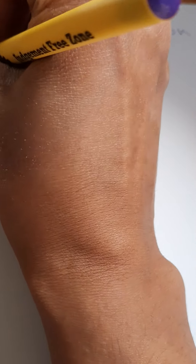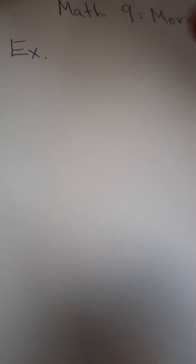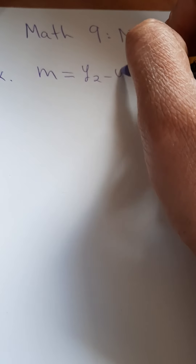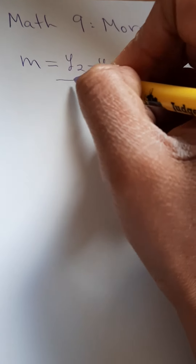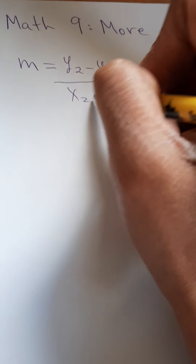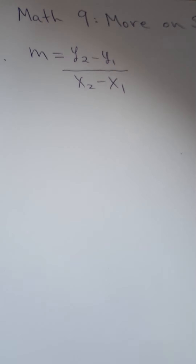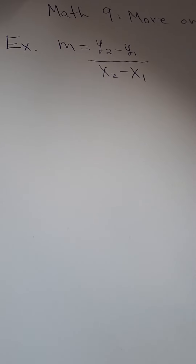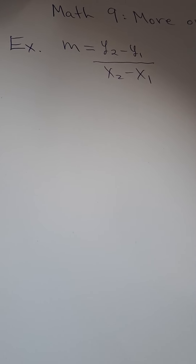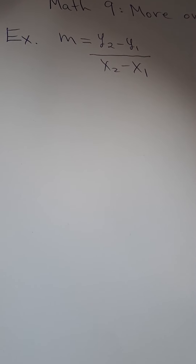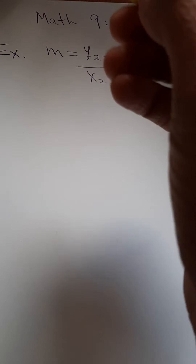Let's find the slopes and write out the slope formula. Whenever you indicate the slope, the formula is y2 minus y1 over x2 minus x1. You should make sure you are memorizing this formula — it is not going to be given to you on a quiz or test.